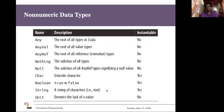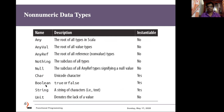In addition to these numerical types, there are other predefined data types in Scala: AnyVal, AnyRef, Nothing, Null, Char, Boolean, String, and Unit. You will most heavily use String, Unit, and Boolean, but sometimes the others are needed as well. The type Any is the root of all types in Scala, and AnyVal is the root of all value types. As we move on, you will understand what these types are and how to use them.